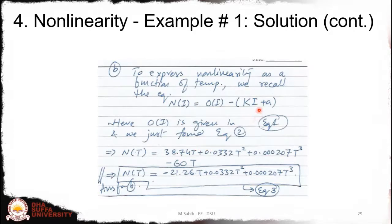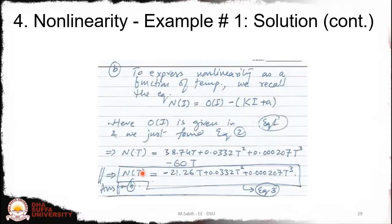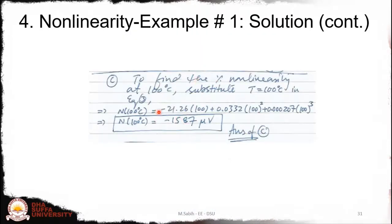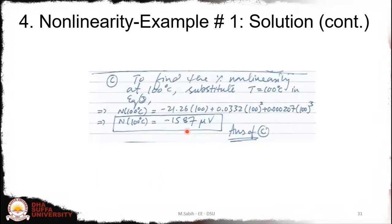Using the original equation minus the linear equation, we arrive at the nonlinearity equation n(T). This is not a single value but a complete equation — nonlinearity as a function of temperature. For example, substituting T = 0 gives the nonlinearity at 0°C, and substituting T = 100°C gives the nonlinearity value at 100°C.